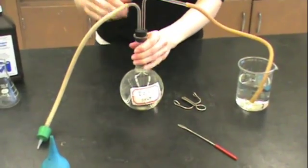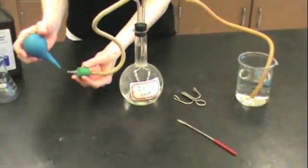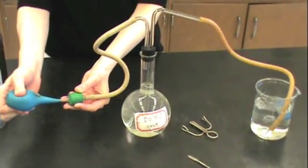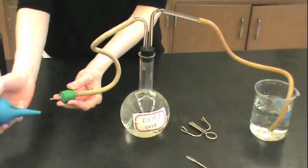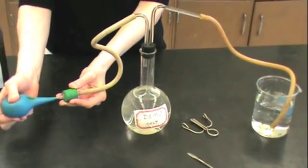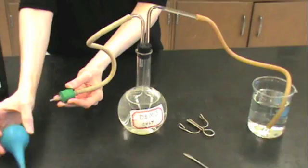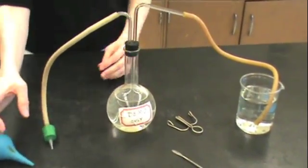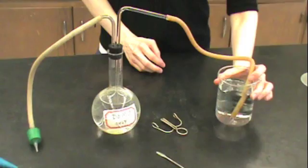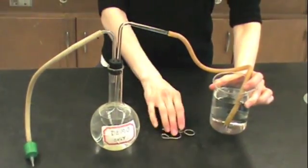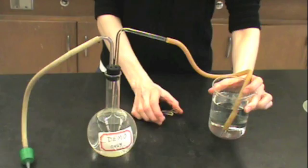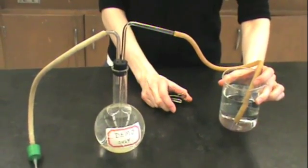Make sure that the stopper is secure on your Florence flask and attach the bulb to the tubing. Squeeze to push water from the Florence flask into the beaker and fill the tubing. Make sure you don't suck with the blue bulb, only squeeze gently to push air through. Now raise your beaker so that it puts the water level at the right level in the Florence flask as it was before.